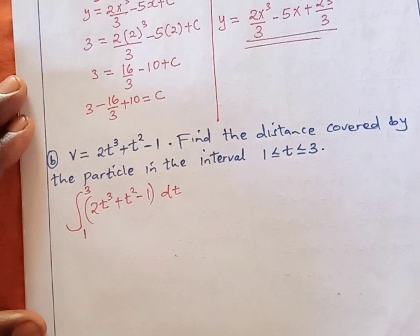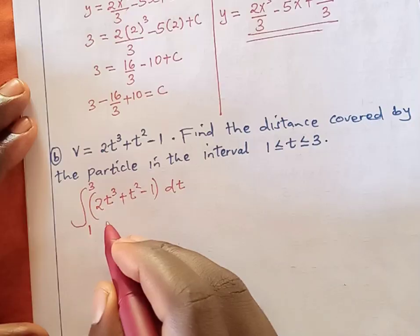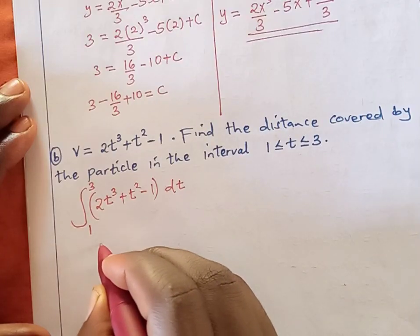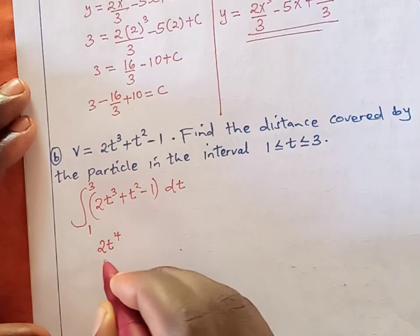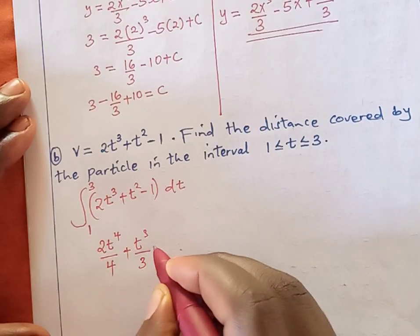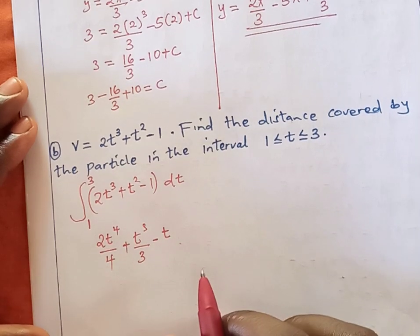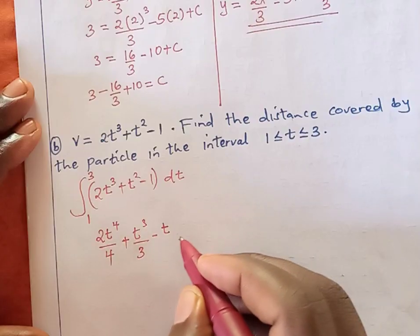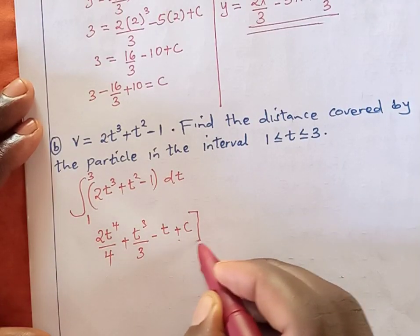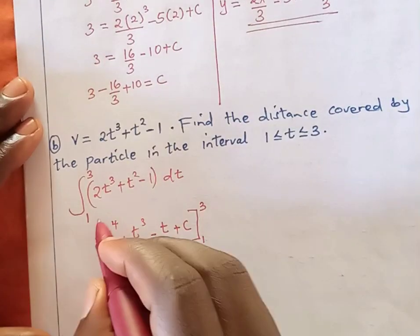We are going to follow the same procedure as part 1. Integrating gives: 2t raised to power 4 divided by 4, plus t raised to power 3 divided by 3, minus t. This time round, there is no need to write c because c cancels at the end. We evaluate the definite integral from 1 to 3 minutes.